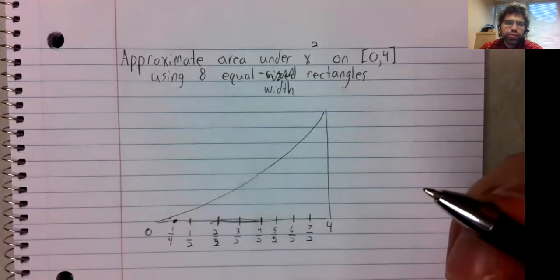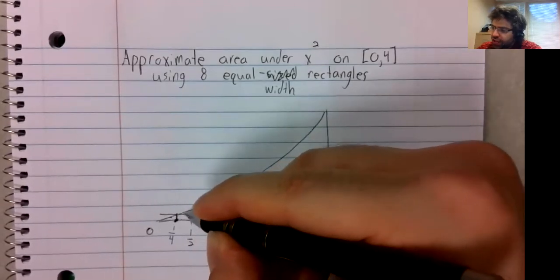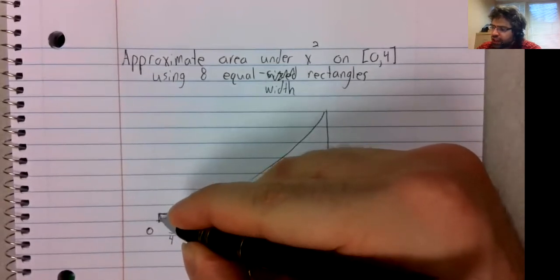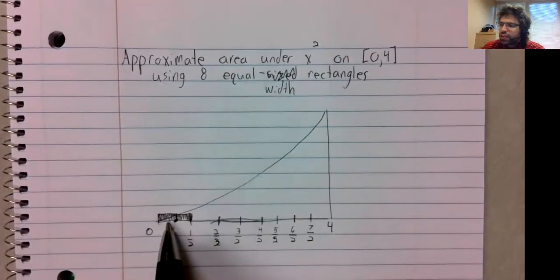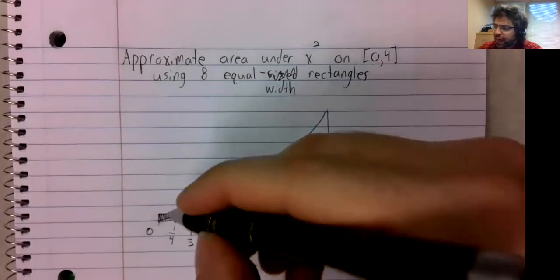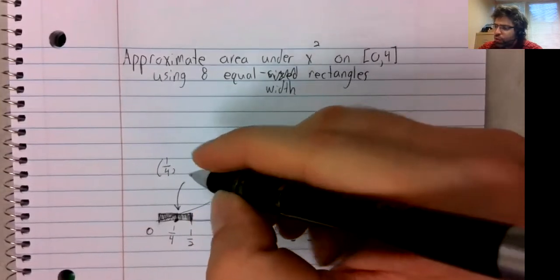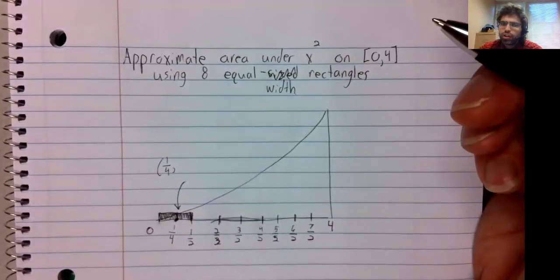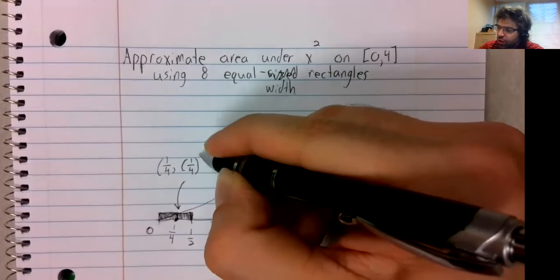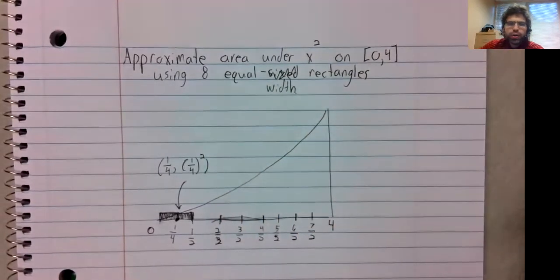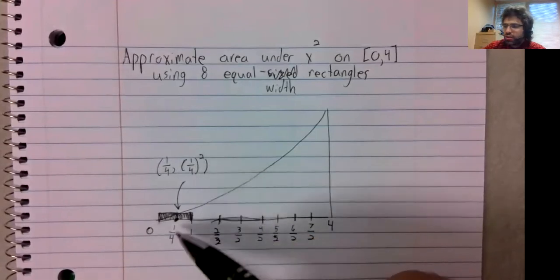At one fourth. And we'll create a rectangle that way. The width of this rectangle is clearly one half. The height, well, this is the point one fourth comma f of one fourth. So one fourth comma one fourth squared.